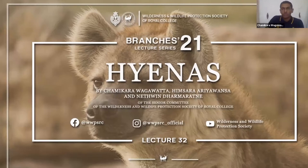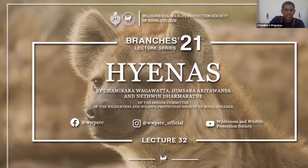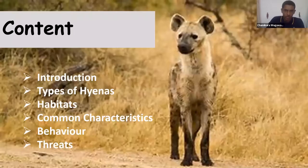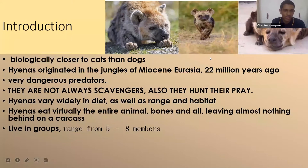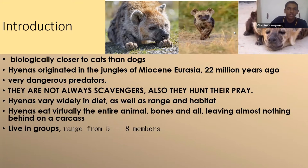Good evening. Welcome to the 37th round lecture. Today's lecture is about hyenas and will be conducted by myself, Chamekira Agartha. Today we will be talking about an introduction to hyenas and their types, habitats, common characteristics, behavior, and threats. Hyenas are biologically closer to cats than dogs — they may look like dogs, but biologically they are more closely related to cats.